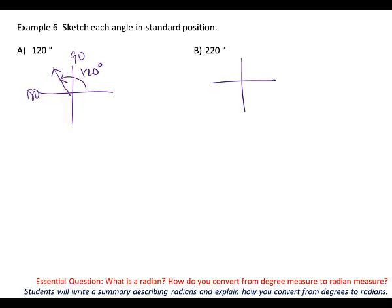Let's think about B. B says negative 220. Hopefully what you learned yesterday is the negative is a directional thing — instead of going counterclockwise, it means we go clockwise. So, this is also like saying negative 90, negative 180, negative 270, and negative 360 if I go backwards around the quadrants. So, where would negative 220 land? Which quadrant? It would land in quadrant 2 as well — closer to the 270 than the 180 — and we label it negative 220 degrees.